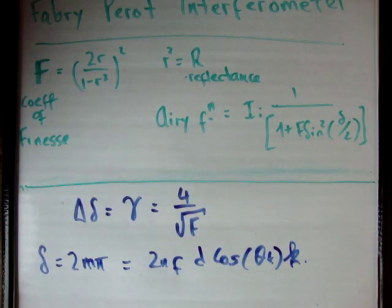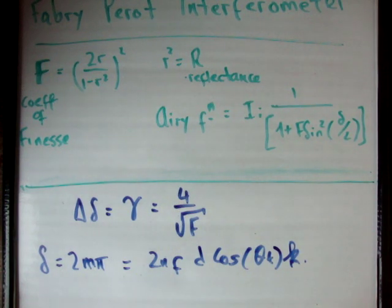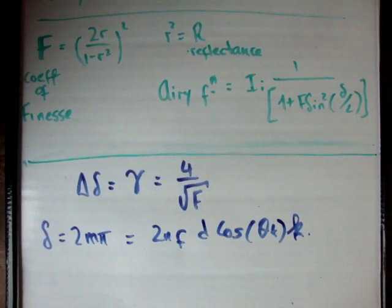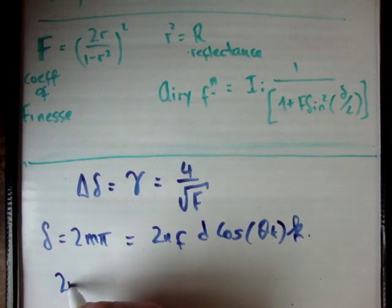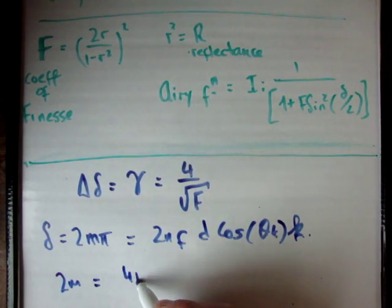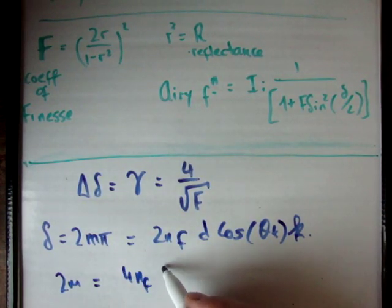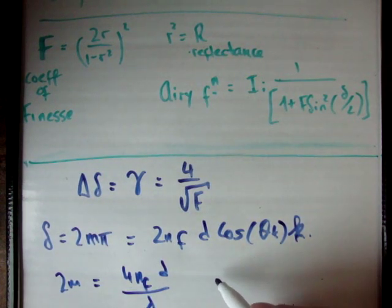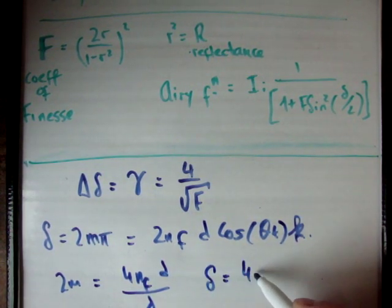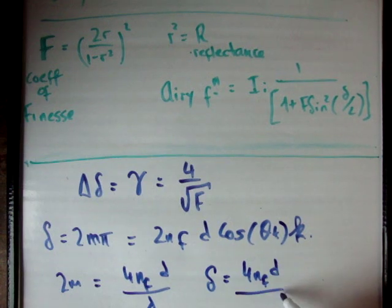And that's another proof, a separate proof which I might do or I may not do. But anyway, that's beside the point. So we can cancel our pi's and we'll find that 2m is equal to 4 n sub f times d over lambda. Where delta is equal to 4 n sub f d over lambda.